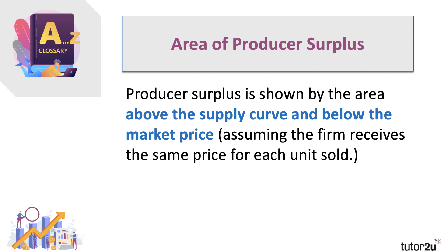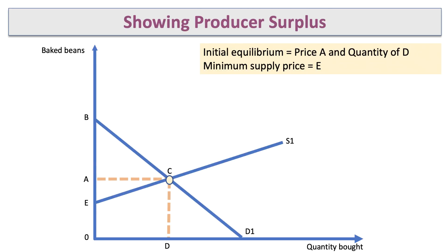Producer surplus is shown below the market price, assuming the firm — which could be a grower or manufacturer — receives the same price for each unit sold in equilibrium. Let's show producer surplus on a diagram. Let's say this is a manufacturer of baked beans. D1 and S1 are the initial supply and demand curves, and the equilibrium is at point C.